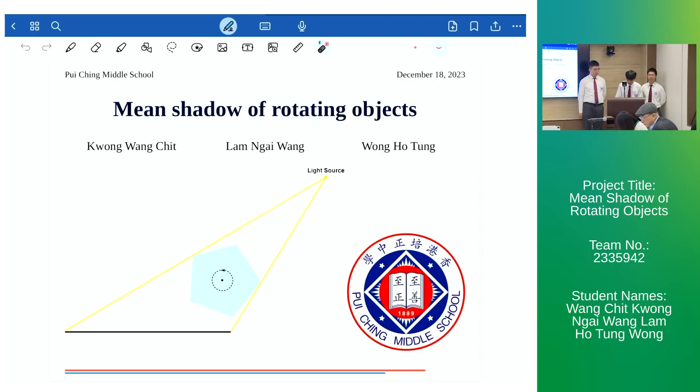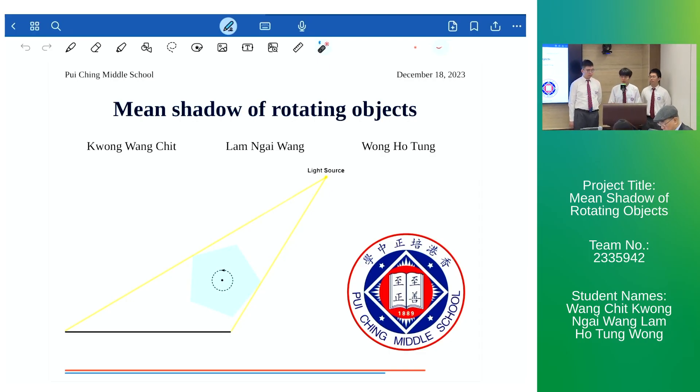Good morning esteemed judges and professors. We are a team from Pui Ching Middle School. Today our topic is mean shadow of rotating objects.